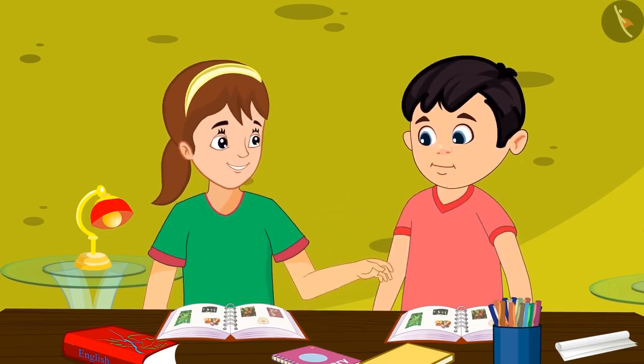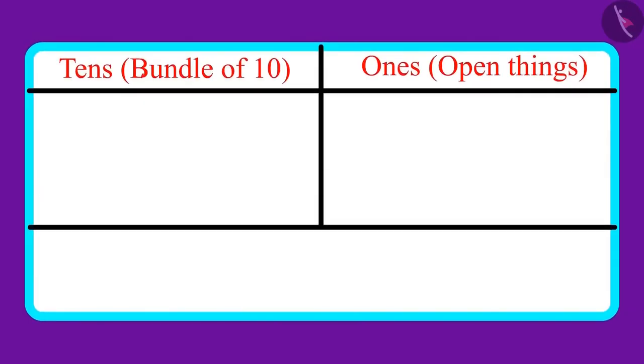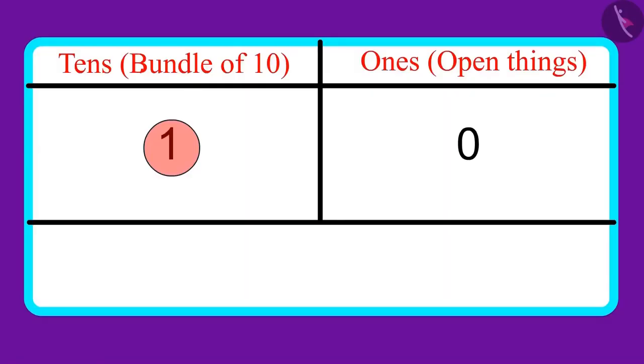Okay, okay Chotu. There are one tens and zero ones in the number of toys. This is wrong Chotu. One tens and zero ones means you have just one toy, but there are many toys in the cupboard.